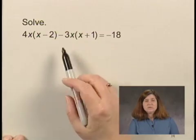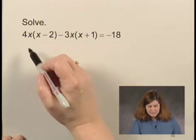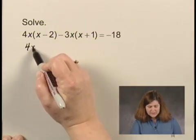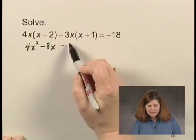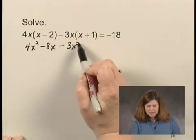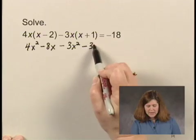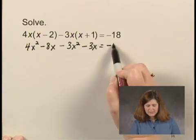We'll begin by multiplying to remove parentheses. We have 4x squared minus 8x minus 3x squared minus 3x equals negative 18.